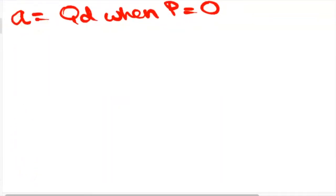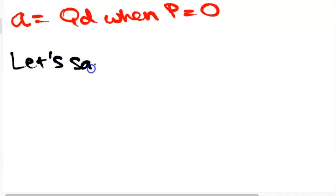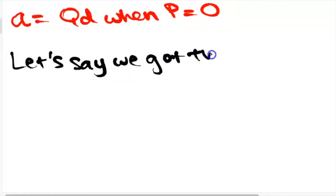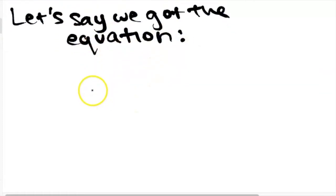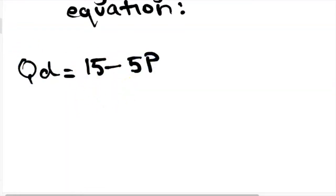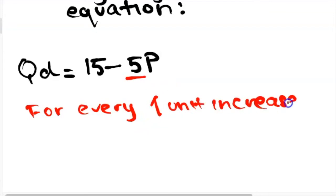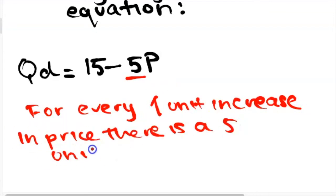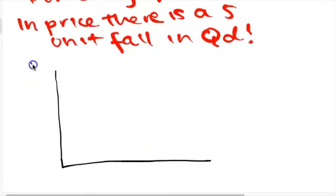So whenever there's a new value of a, there's a new value for the horizontal intercept and we would basically be shifting the demand curve. So let's say we got the equation: quantity demanded equals 15 minus 5p. The slope is 5, meaning that for every one unit increase in price there will be a 5 unit decrease in the quantity demanded.